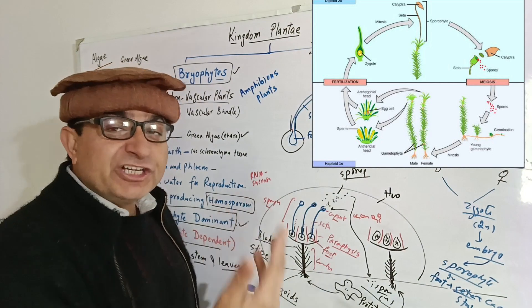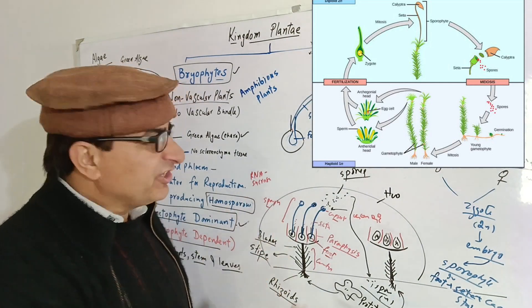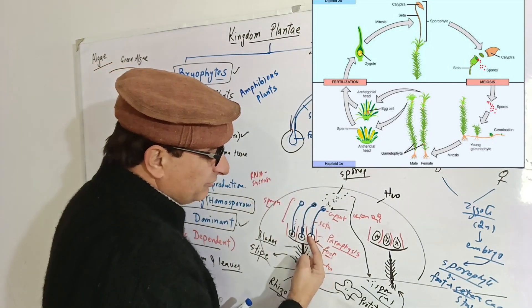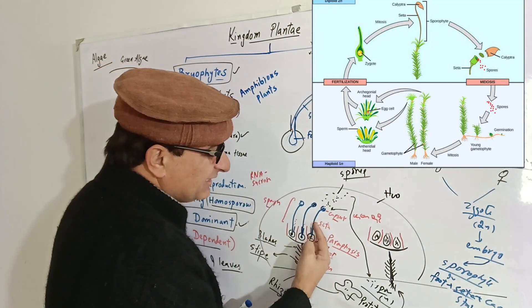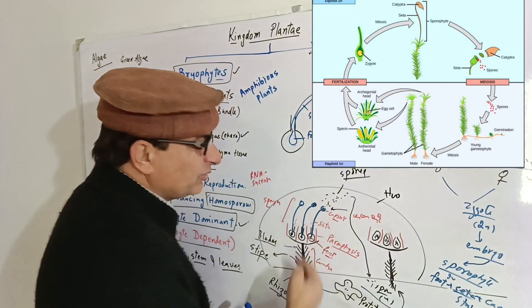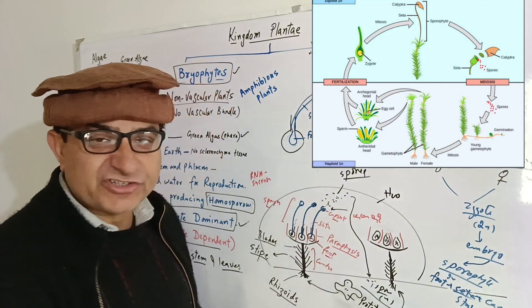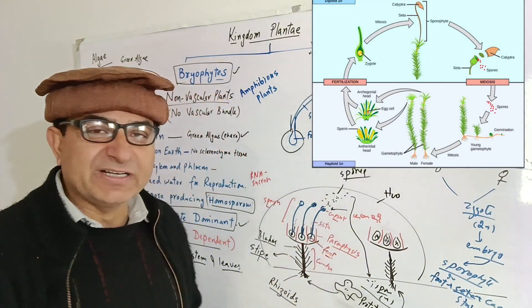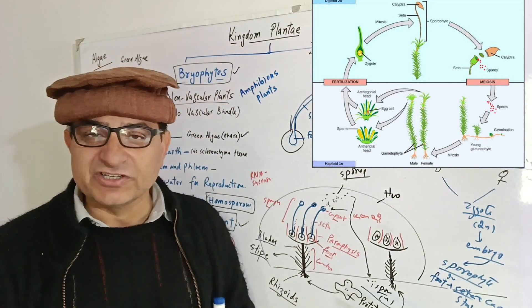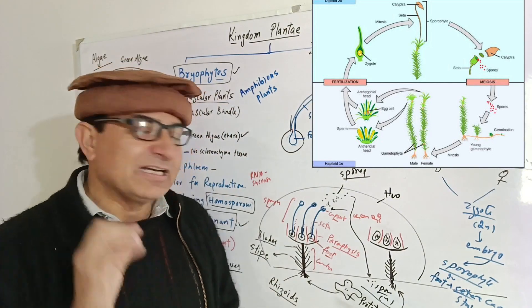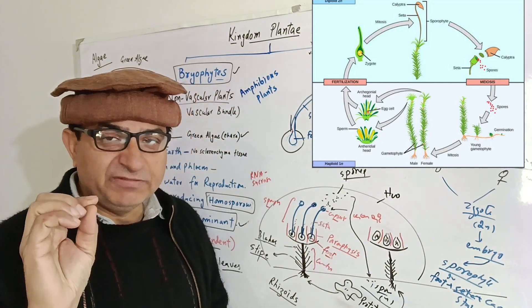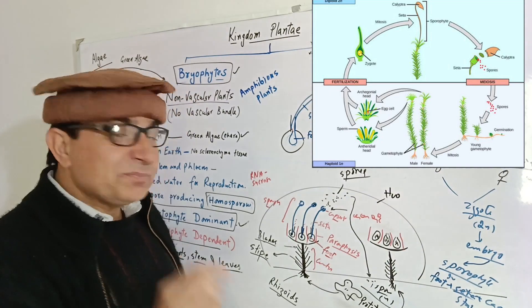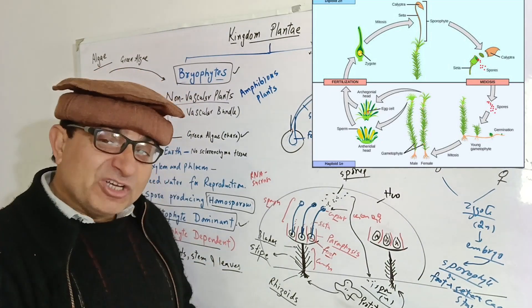The embryo will differentiate into a sporophyte generation. The sporophyte generation consists of foot, seta, and capsule (sporogonium). This generation is totally dependent on the gametophyte. The sporophyte generation is meant for production of spores as a result of meiosis, completing the life cycle.